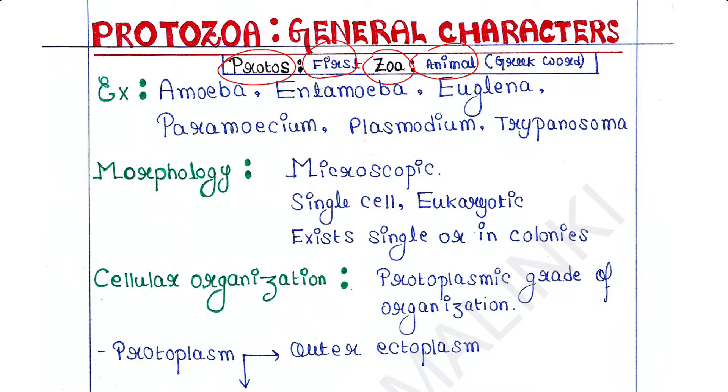Some examples are amoeba, entamoeba, euglena, paramecium, plasmodium, trypanosoma, etc. Morphology: they are microscopic animals. You cannot see them with your naked eye.